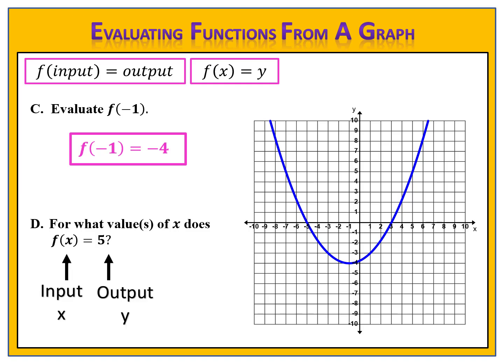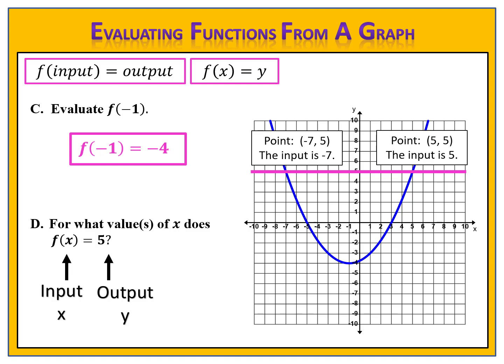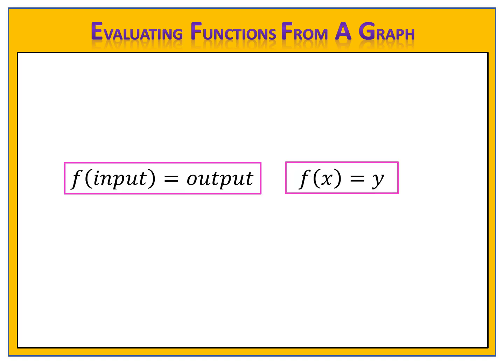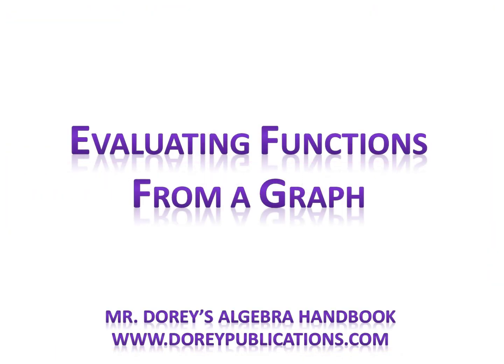The final question: for what value of x does f of x equal 5? F of input equals output — the output is 5 and we want to know what the input is. We draw our line across the graph at 5 and look for the points of intersection. This time there are two: (−7, 5) and (5, 5). The input negative 7 has an output of 5, and the input 5 also has an output of 5. So x equals negative 7 or x equals 5. And now you know how to evaluate a function from a graph — it all comes down to f of input equals output, then looking at the graph carefully to find the information you want.